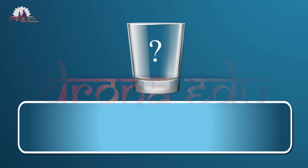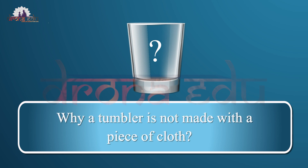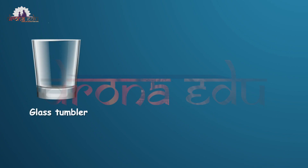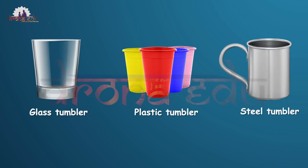Have you ever wondered why a tumbler is not made with a piece of cloth? We generally use a tumbler to keep a liquid, so it would be silly to make a tumbler out of cloth. Therefore, a tumbler is either made of glass, plastic, metal, or other such material that will hold water.